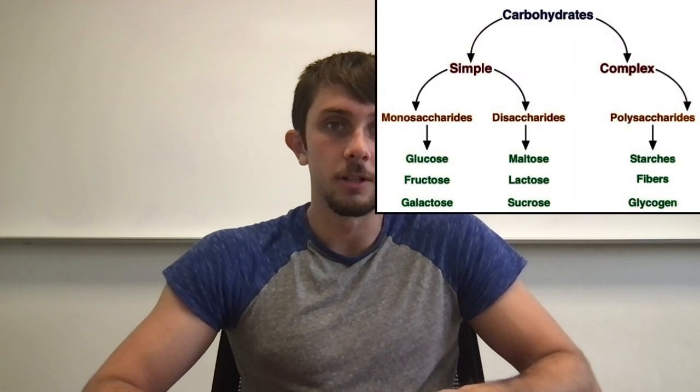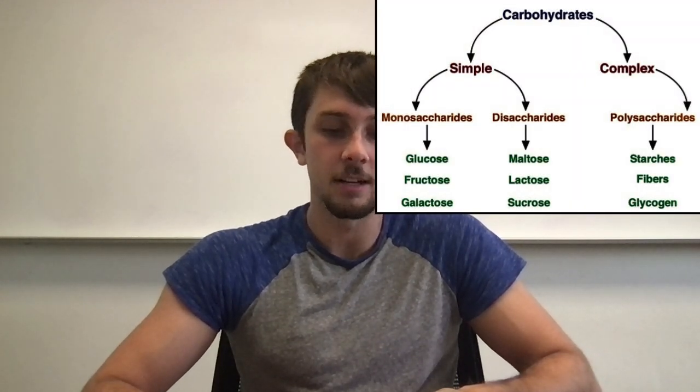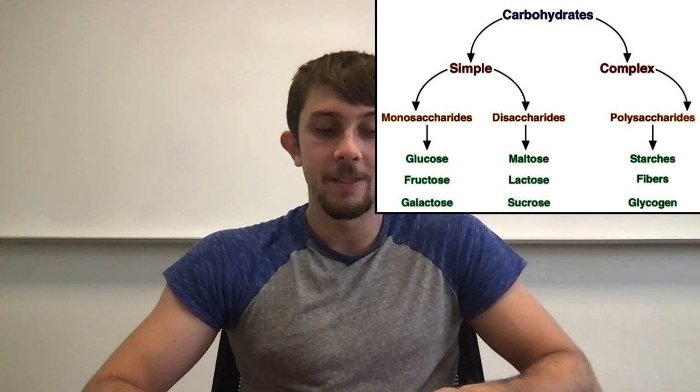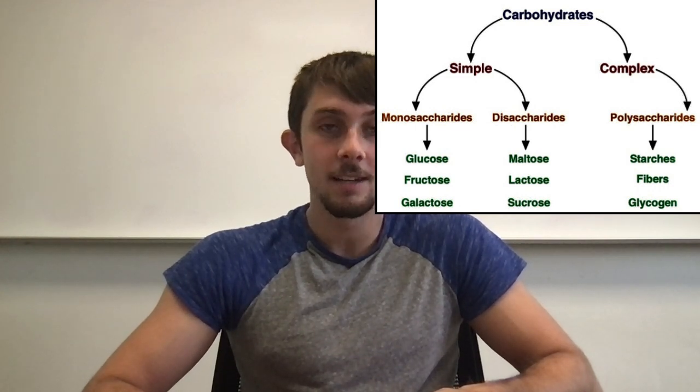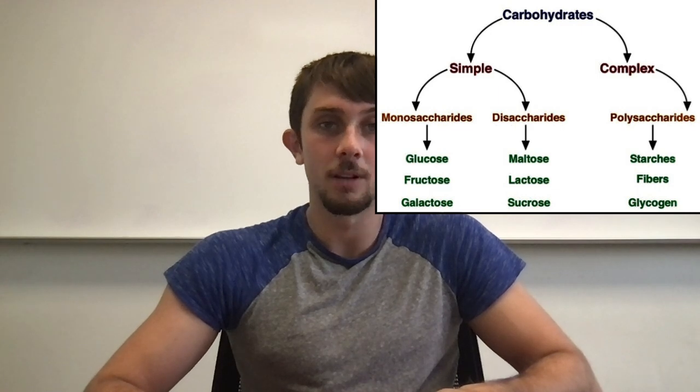Carbs 101 — carbohydrates. They're one of the three big macronutrients and the major source of energy for humans. Carbs can be classified in a few ways. There are simple sugars, known as monosaccharides and disaccharides. Monosaccharides have one sugar unit, disaccharides have two. Then there are complex carbohydrates, known as oligosaccharides — which have 3 to 10 sugar units — and polysaccharides, which have 10 plus sugar units.